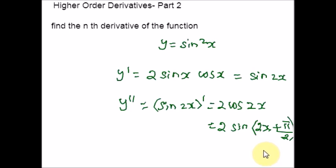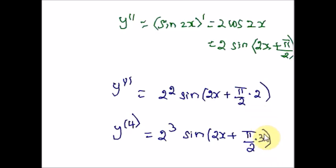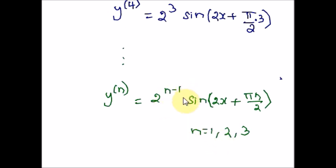So this is the first and second derivative. Now finding the third and fourth derivatives using co-function identities — where cos α = sin(α + π/2) and -sin α = sin(α + π) — it is easy to detect the pattern. The nth derivative is given by 2^(n-1) · sin(2x + πn/2), where n = 1, 2, 3, ... Hope you are clear with this example.